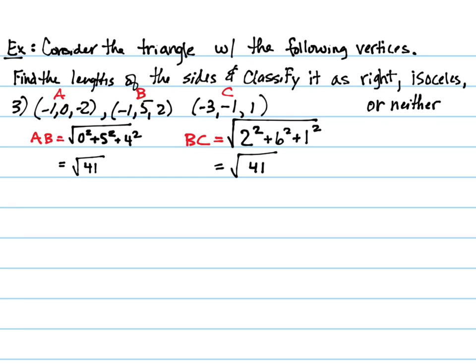So we already know it's isosceles at the very least — it could even be equilateral, but that's not one of the things we're testing for. We need a third side. What would have to be true if this were a right triangle? The Pythagorean theorem would need to be satisfied. Even if the square root of 41s weren't matching, we're looking for something to satisfy the Pythagorean theorem.